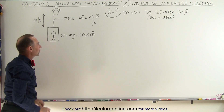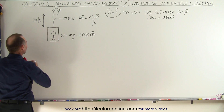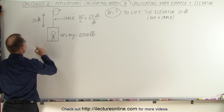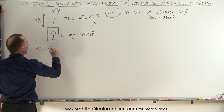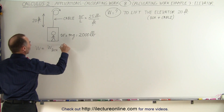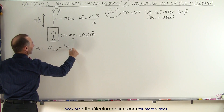This is fairly straightforward. We can say that the work done is going to be equal to the work done to lift up the box of the elevator plus the work done to lift up the cable.